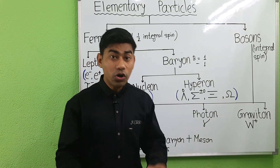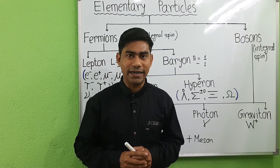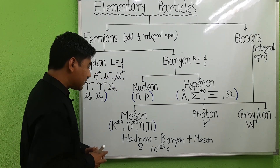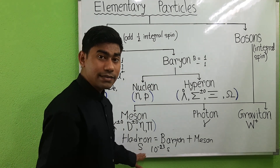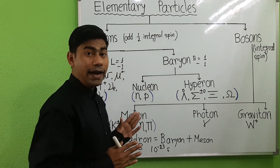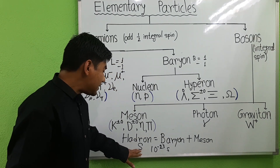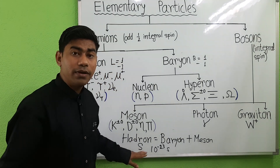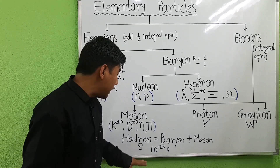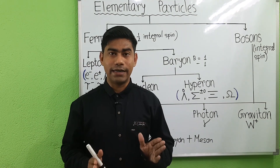This shows that they do not decay by strong interaction. The strangeness quantum number S is conserved in strong and electromagnetic interaction, but violated in weak interaction.